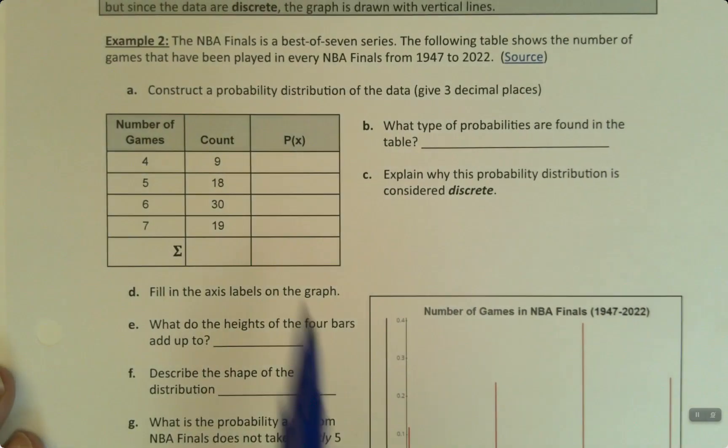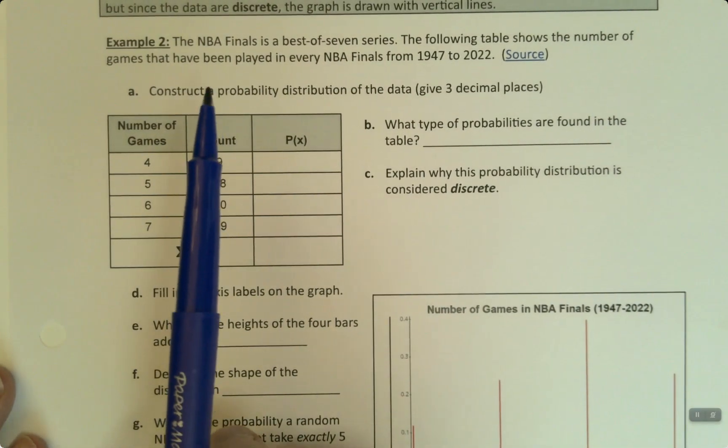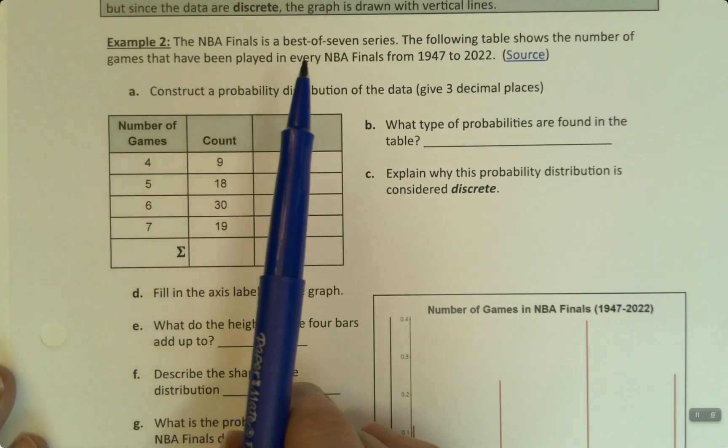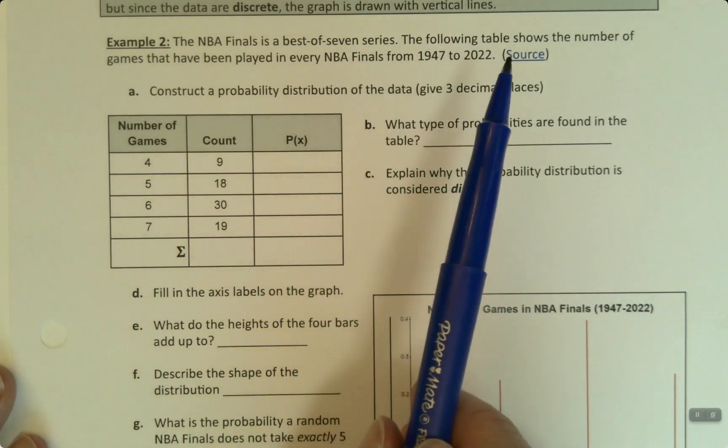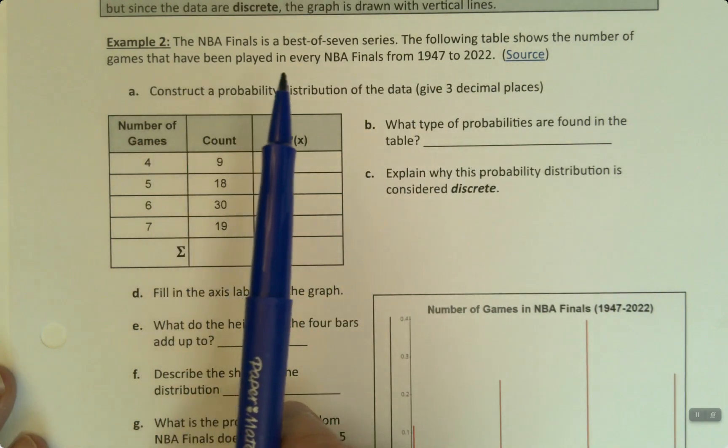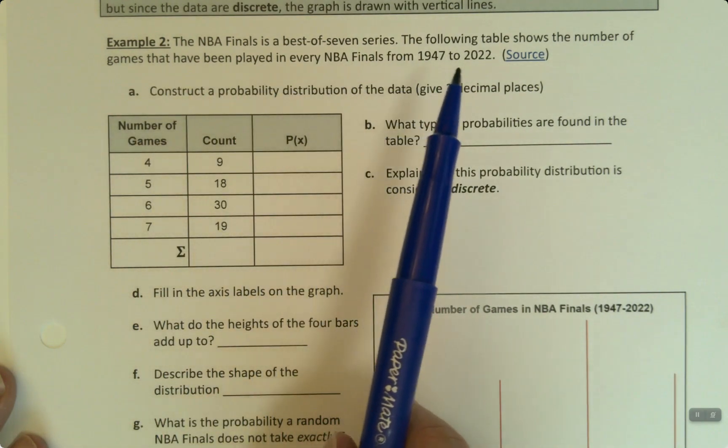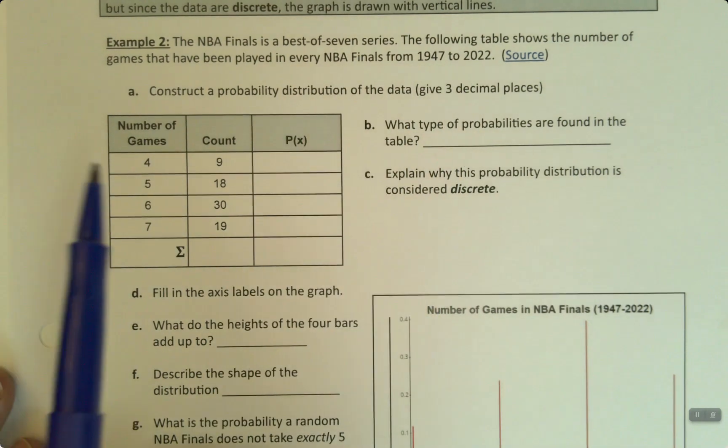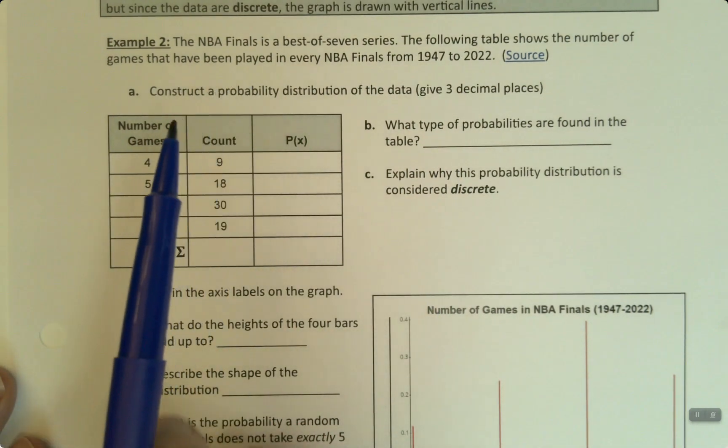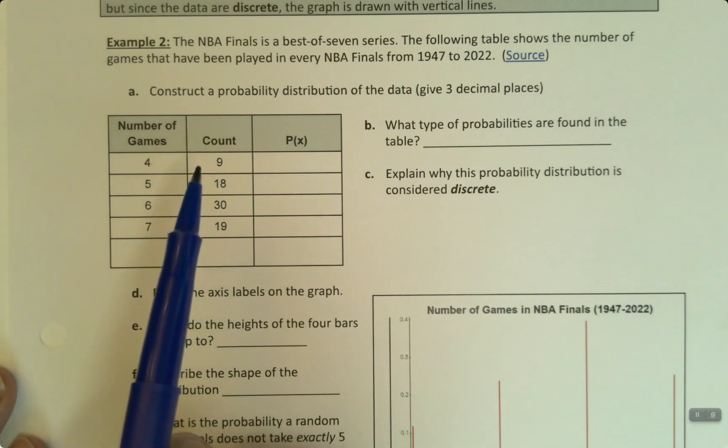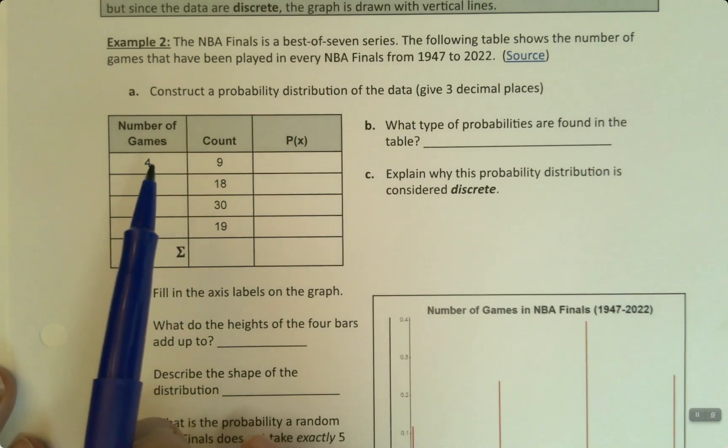Let's look at this example about the NBA Finals. The NBA Finals is a best-of-seven series. The following table shows the number of games that have been played in every NBA Finals from 1947 to 2022. Best-of-seven means the first team to get to four games wins.